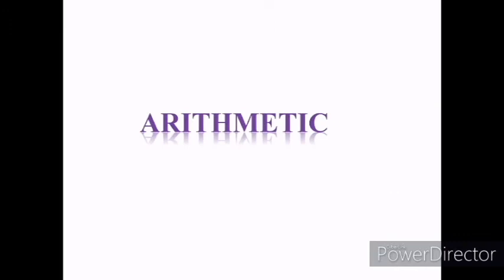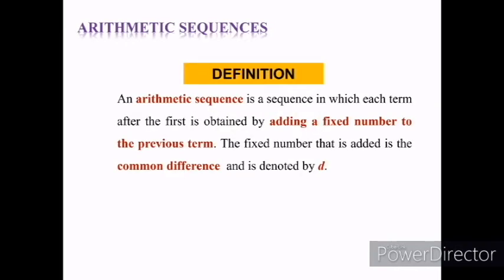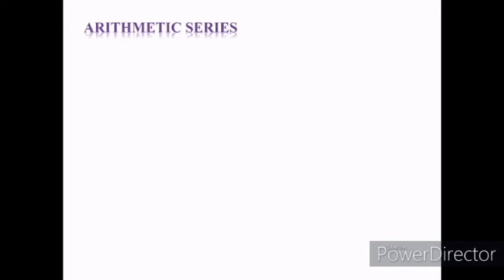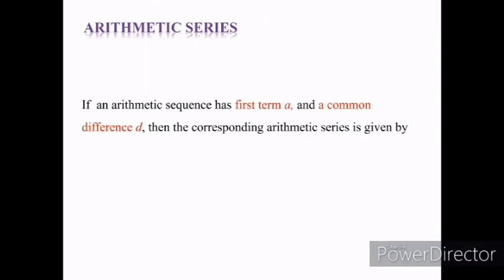Now, we will continue with arithmetic sequences. An arithmetic sequence is a sequence in which each term after the first is obtained by adding a fixed number to the previous term. The fixed number that is added is the common difference, denoted by d. The nth element of an arithmetic sequence is given by t(n) = a + (n − 1)d, where t(n) represents the nth term, a is the first term, and d is the common difference. If an arithmetic sequence has first term a and common difference d, then the corresponding arithmetic series is given by S(n) = (n/2)(a + t(n)), or S(n) = (n/2)(2a + (n − 1)d).